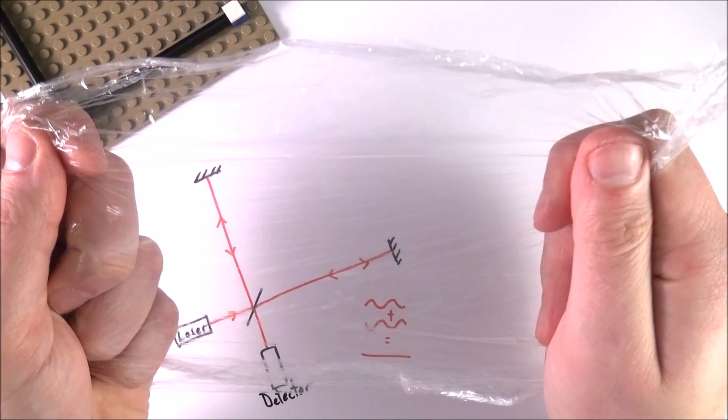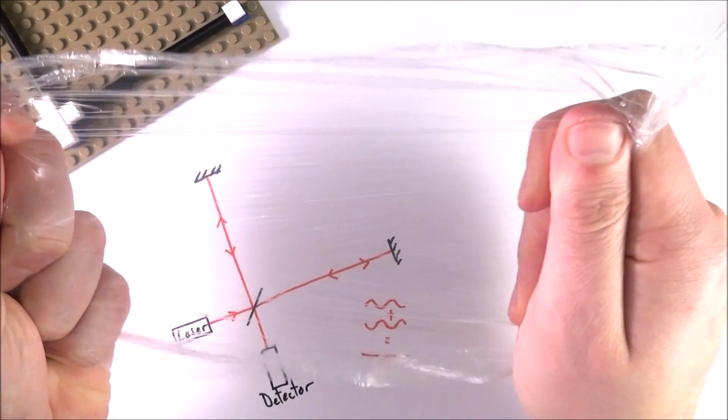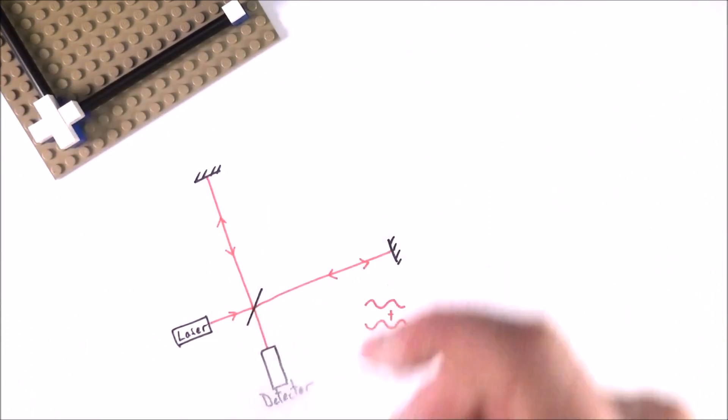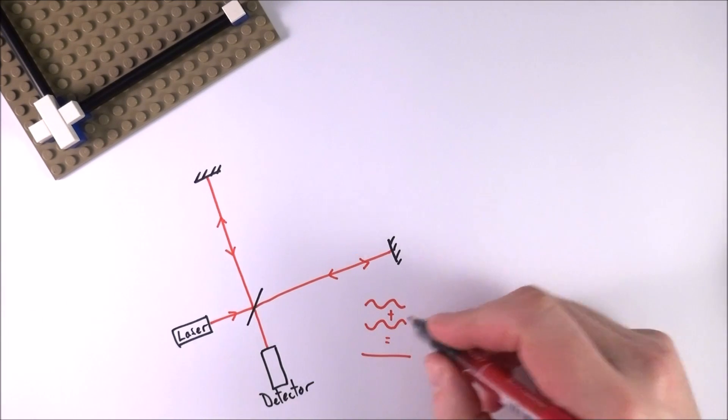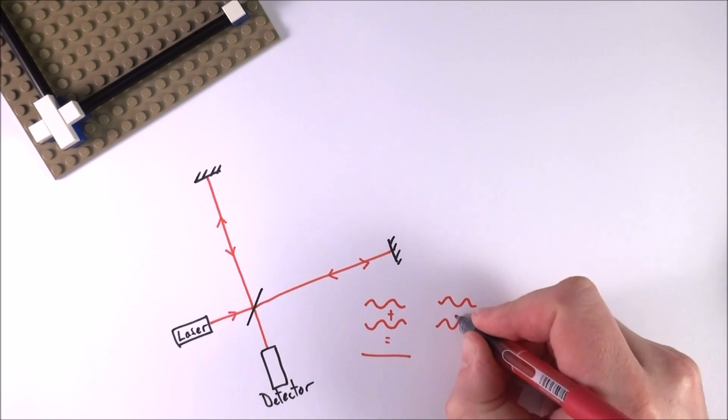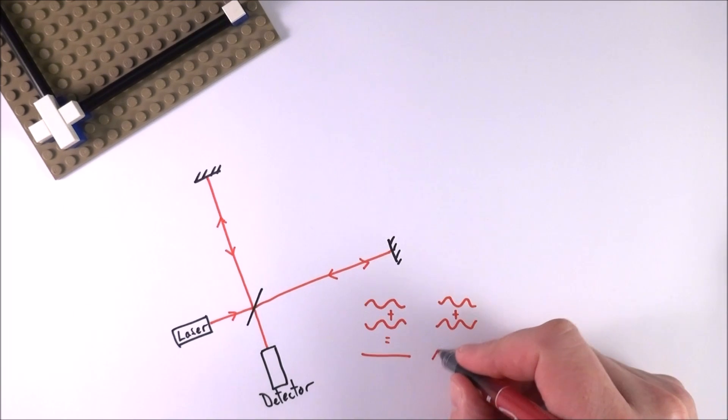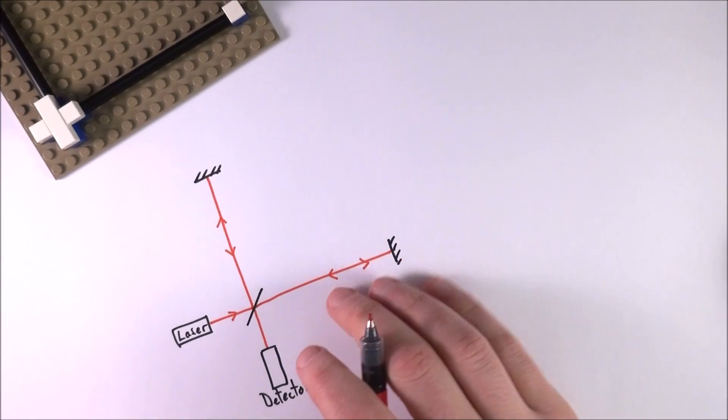But if we have a gravitational wave moving through the Earth from some massive event far away, it's actually changing the dimensions. That means at some point this distance is going to be less than that. Rather than these two waves being in antiphase, it shifts it along slightly, and we might have some constructive interference. We get a signal in our detector, and the only way that can happen is if we have a gravitational wave.